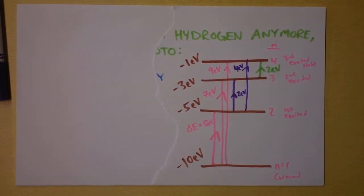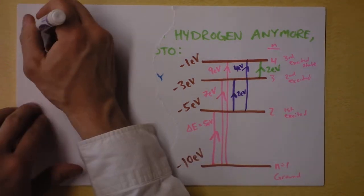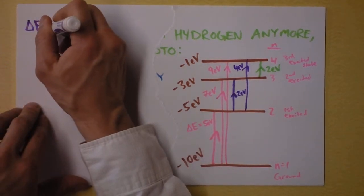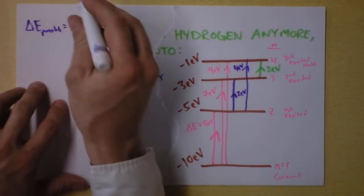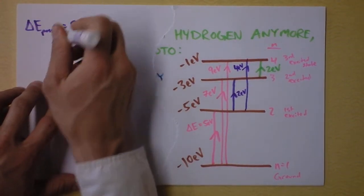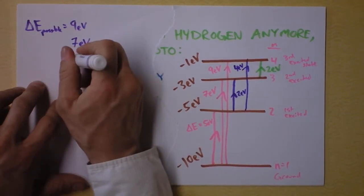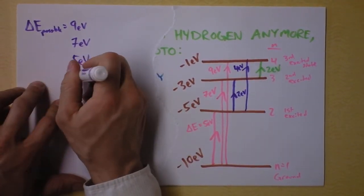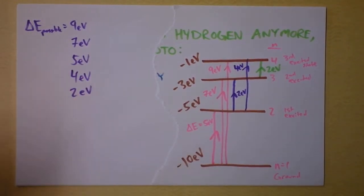Don't get confused by the minus signs. Don't get confused by any of that nonsense. Now we need to do this. We're saying that the possible changes in energy, delta E possible, is - let's see - we've got 9 electron volts, 7 electron volts, 5 electron volts, 4 electron volts, and we've got 2 different options for 2 electron volts.